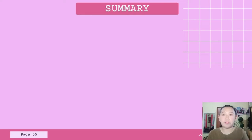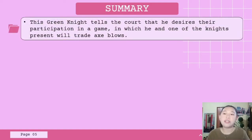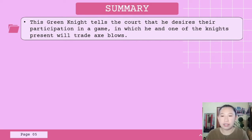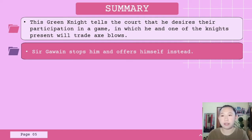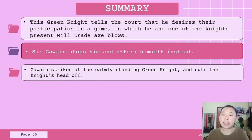The story starts when the court of King Arthur is celebrating New Year's Eve. At the height of the festivities, a massive green figure bursts in, terrifying them. This Green Knight tells the court that he desires their participation in a game, in which he and one of the knights present will trade axe blows. The chosen knight will take the first strike, and then must wait a whole year to receive a return strike from the Green Knight. The knights make no answer, but when their visitor mocks them for cowardice, Arthur steps up to offer himself as the contender. Just as the king readies himself to take his strike with the axe, Sir Gawain stops him and offers himself instead. Gawain strikes at the calmly standing Green Knight and cuts the knight's head off. The court is astonished when the knight picks up his head from the floor and instructs Gawain to find him at the green chapel before riding away.